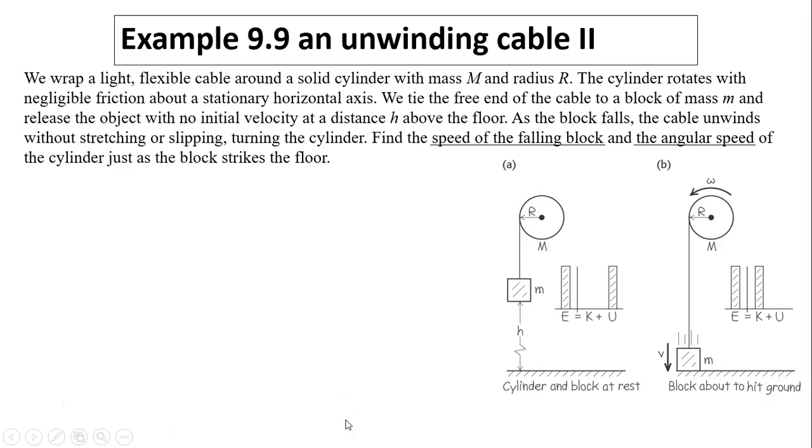Let's take a look at another example. We wrap a light, flexible cable around a solid cylinder with mass M and radius R. The cylinder rotates with negligible friction about a stationary horizontal axis. We tie the free end of the cable to a block of mass M and release the object with no initial velocity at a distance H above the floor. As the block falls, the cable unwinds without stretching or slipping, turning the cylinder. Find the speed of the falling block and angular speed of the cylinder just as the block strikes the floor.